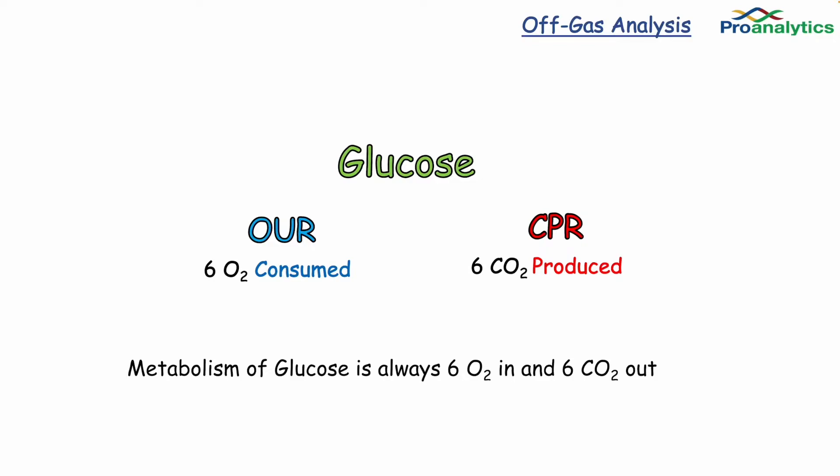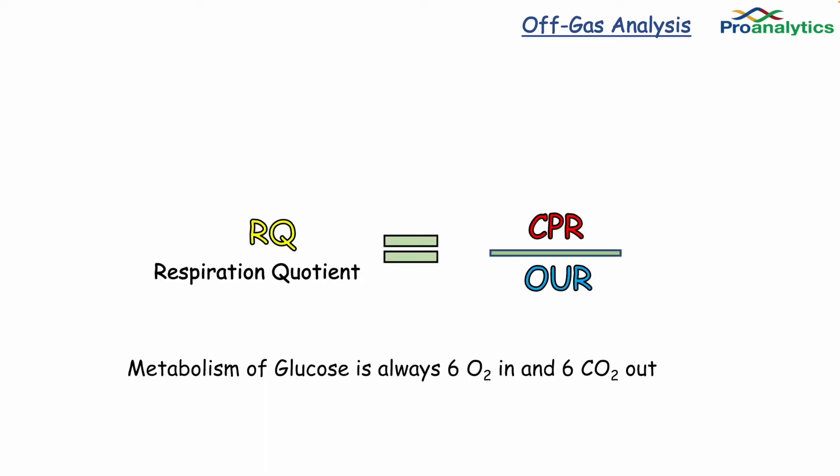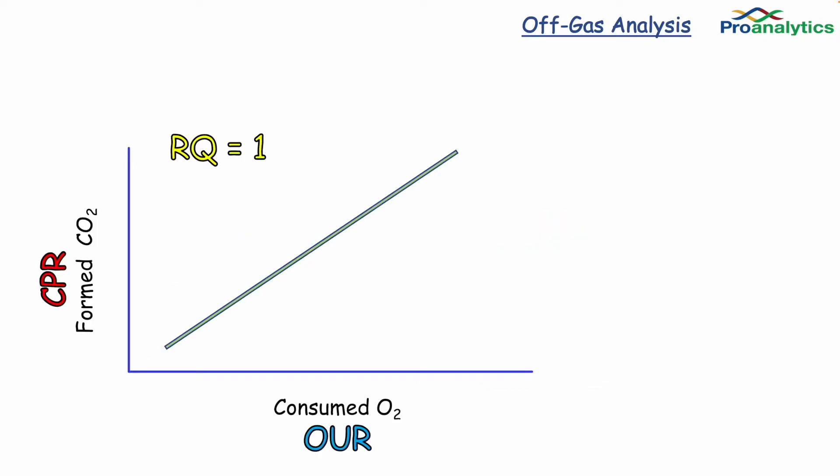From these two values, the respiration quotient, or RQ, can be calculated. RQ is the ratio of formed CO2 to consumed O2. At 100% efficiency, the RQ will equal 1, giving us a nice linear graph when consuming glucose.